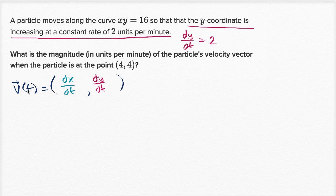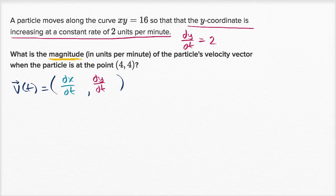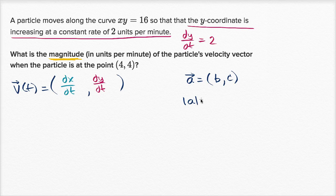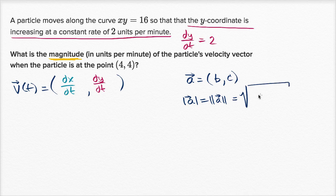But they're not asking us just for the velocity vector components — they're asking for the magnitude of the particle's velocity vector. If I have some vector a that has components b and c, the magnitude of that vector — sometimes written with single bars, sometimes with double bars — comes straight out of the Pythagorean theorem: it's going to be the square root of b squared plus c squared, the x component squared plus the y component squared.